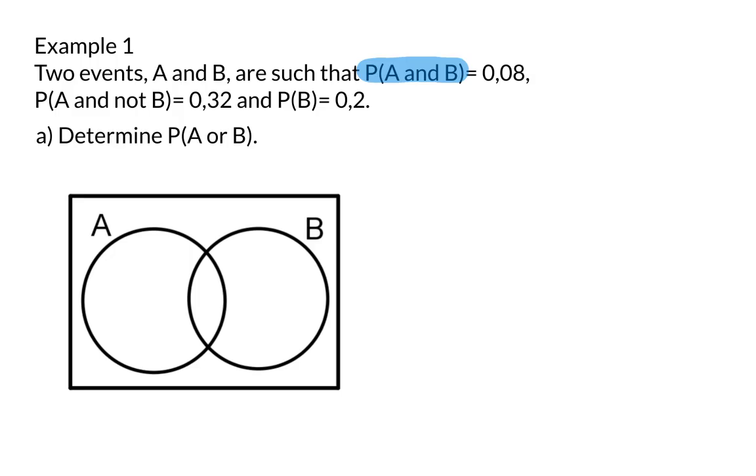When completing your Venn diagram, it is important to always start at this intersection. And here, we were given that the probability of A and B is 0.08. We were also given that the probability of B is 0.2. This is the probability for the full circle B, and that means to get the part that is only B, we need to take the 0.2 and subtract 0.08, and that will give us 0.12.